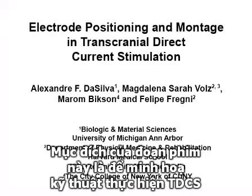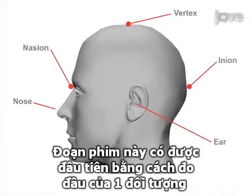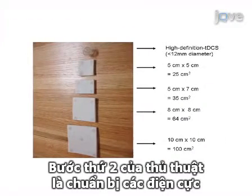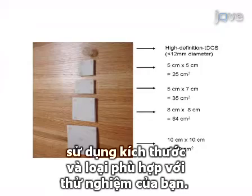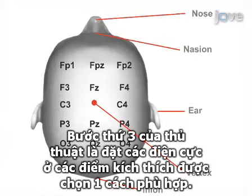The purpose of this video is to demonstrate the technique for administering a session of tDCS using primary motor cortex stimulation as an example. This is accomplished by first measuring the subject's head and marking the sites of stimulation. The second step is to prepare the electrodes using the size and type appropriate for your experiment. The third step is to place the electrodes properly on the chosen site of stimulation.